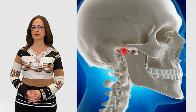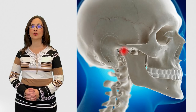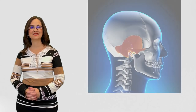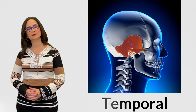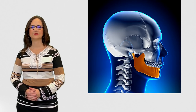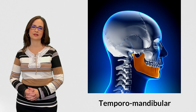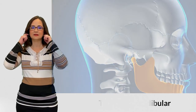The Temporomandibular Joint is where the jaw articulates with the skull to open and close the mouth. This is the most used joint in our body — we use it when we talk, eat, or drink. It gets its name because it connects the temporal bone in the skull to the mandibular bone, also known as the jaw. The TMJ is located right in front of the ear.